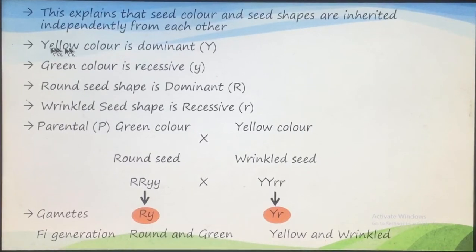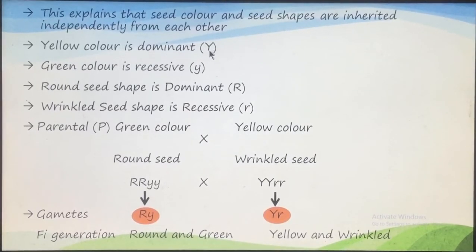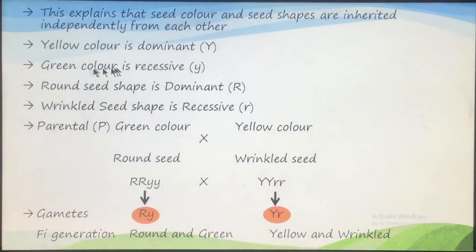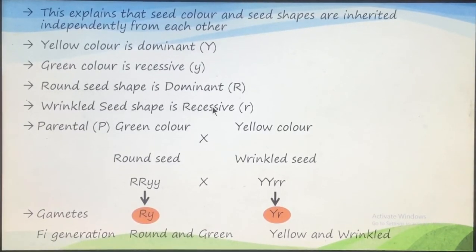Yellow color is dominant because in the monohybrid cross, in F1 generation all seeds were of yellow color. So yellow color is dominant and is expressed as capital Y. The dominant character is always written with capital letters, and green color is a recessive character symbolized by small y. Similarly, round seed shape is a dominant character represented by capital R, whereas wrinkled seeds are recessive, symbolized by small r.